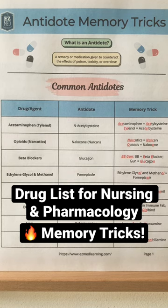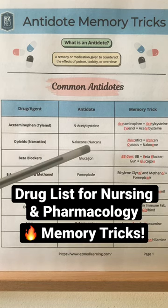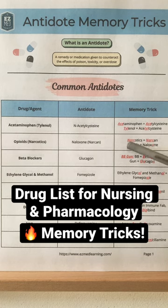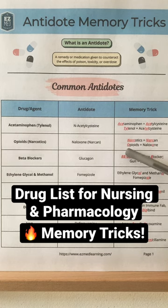Next we have opioids or narcotics. The antidote is naloxone or Narcan. You can remember narcotics and Narcan both start with NARC. Or you can use the O for opioids and the long O in naloxone.